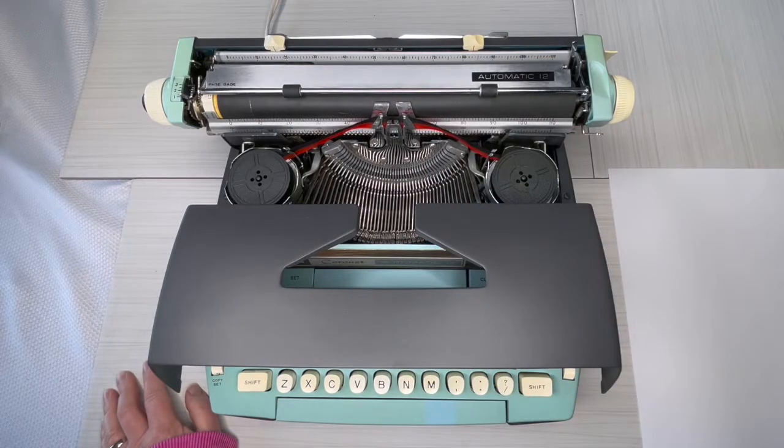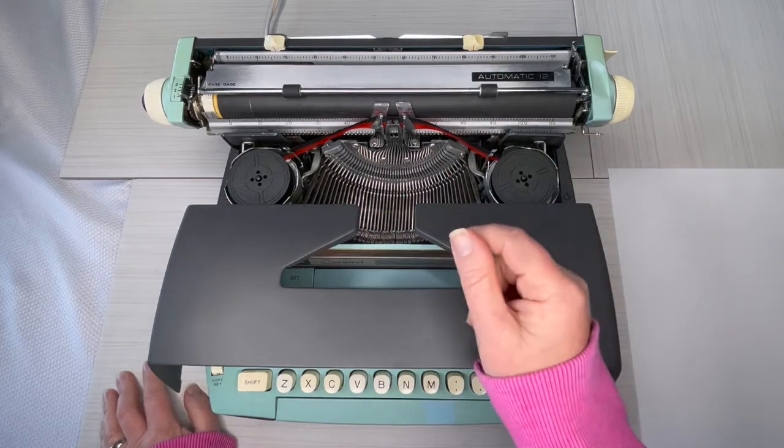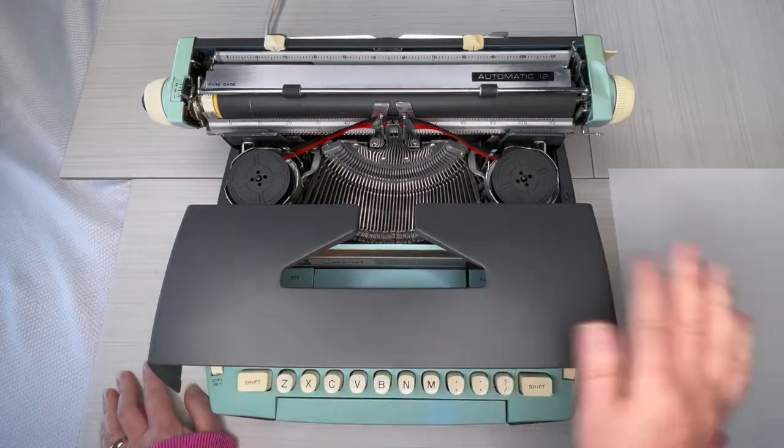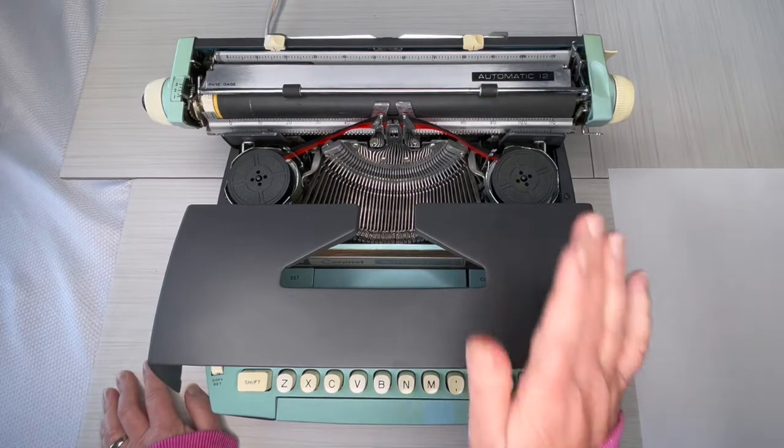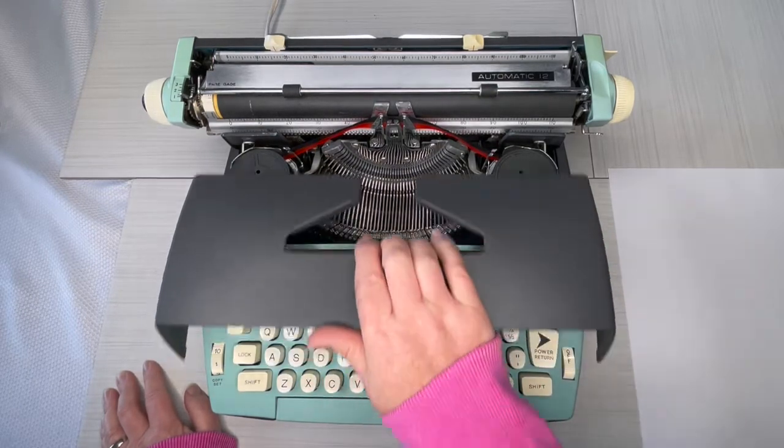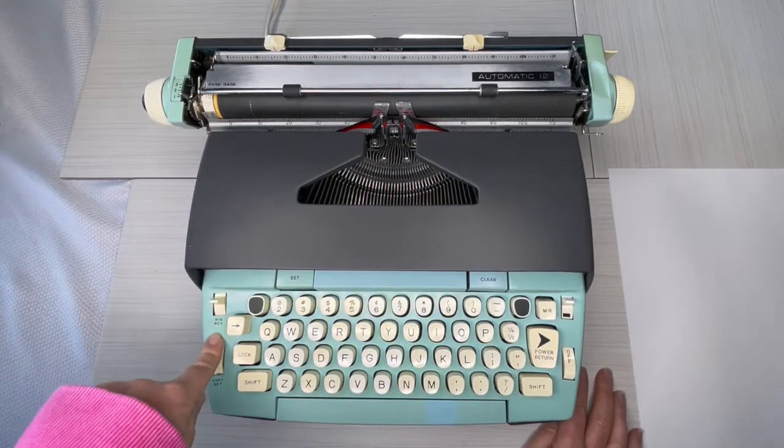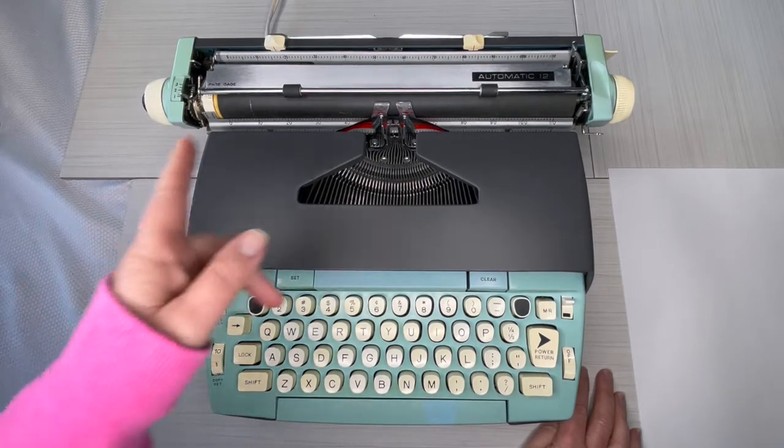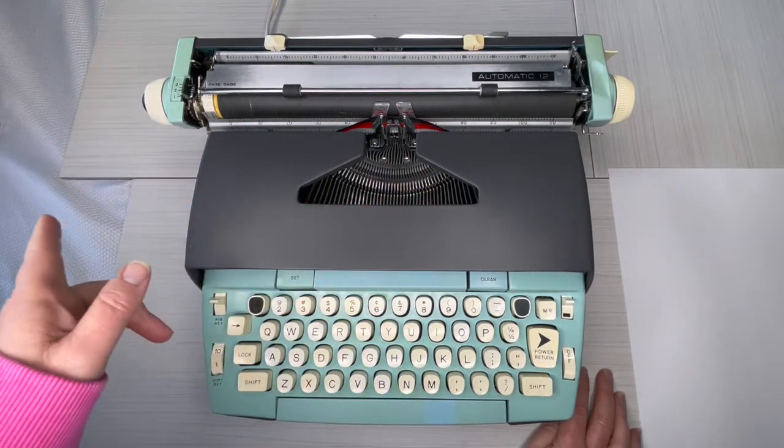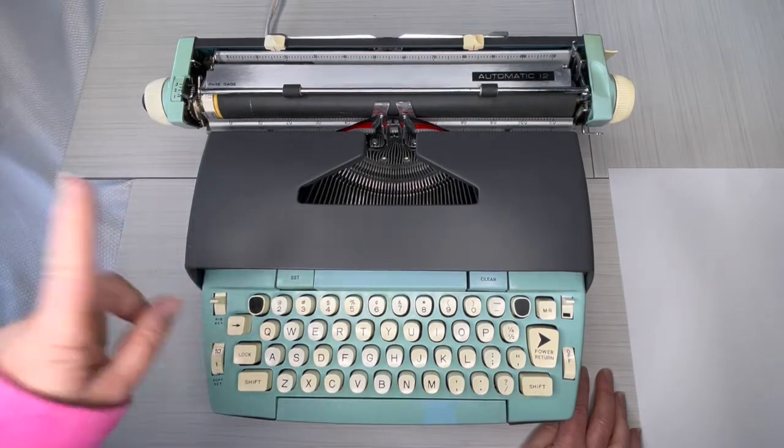Okay, so when you get to the end of the spool, the typewriter is just gonna lock up on you and you're gonna think, oh, something's wrong. There's nothing wrong with your typewriter. You just need to reverse the direction of your ribbon, and you do that right here. Rib rev, ribbon reversal. And you should be able to reverse the direction of that ribbon dozens and dozens of times before you need to replace that ribbon.